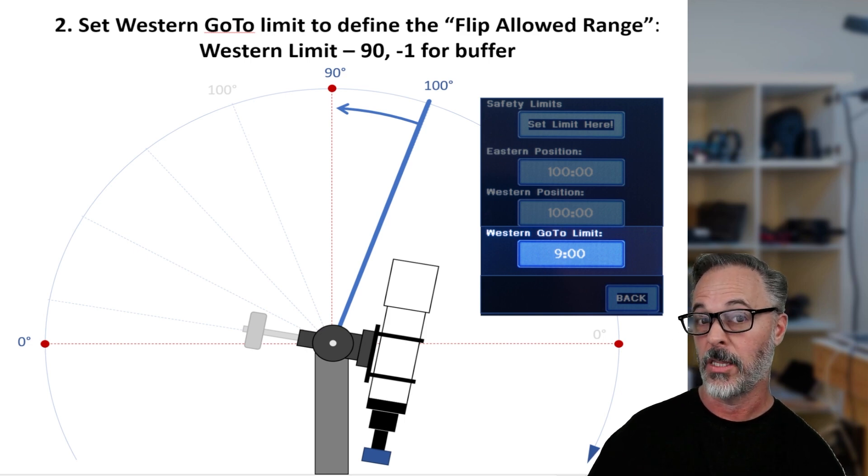The last piece is we're going to calculate the western go-to limit. And this defines the other side of that range. And the way to think about this is you're going to take that western position and you're going to subtract 90 degrees from it. And that's of course going to be the meridian itself. And then we're going to subtract an additional one just as a buffer. So in this case, if my western position is 100 degrees, we're going to remove 90. So that leaves me with 10 degrees. And we're going to remove one just as a buffer. And that leaves me with a nine degree western go-to limit.